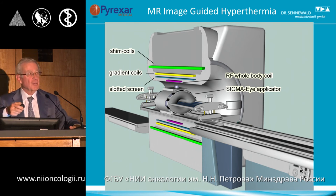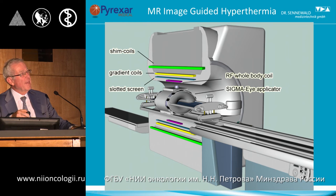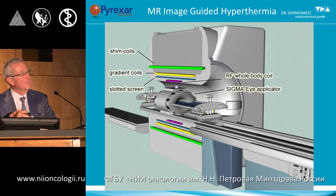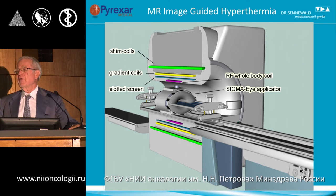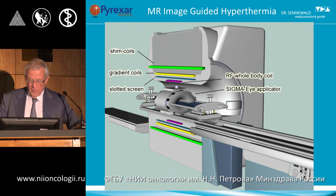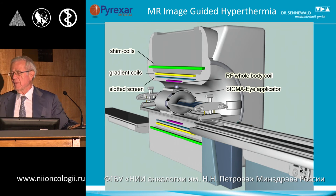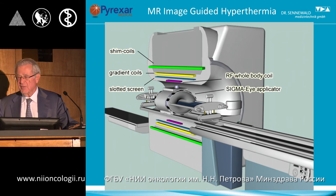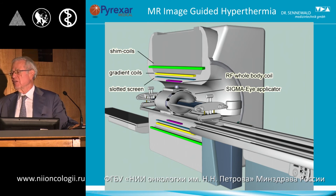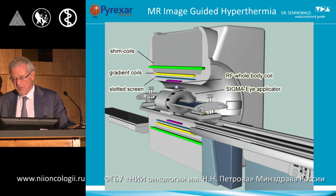It is particularly important that the isocenter of the magnet tunnel and the applicator are the same. At the time this was fairly easy to achieve because the magnet diameter was 60 cm and the applicator barely fit inside the 60 cm tunnel — so by mechanical engineering necessity, the device fitted nicely in the isocenter of the system.